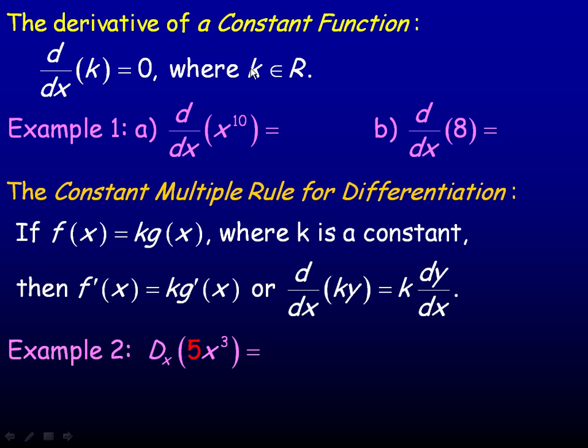Flipping over to the second page, we're going to talk about another derivative rule, the derivative of a constant function. If k is a constant, k is any real number, the derivative of any constant is 0. Remember, the derivative represents a rate of change. So a constant, by definition, doesn't change. So that's why its derivative would always be 0.